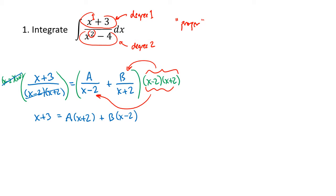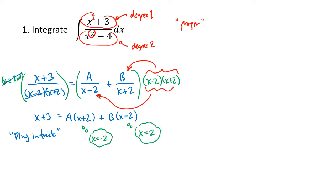With these simpler examples — no repeated factors and all linear factors — we can use what I call the plug-in trick. Because this equation needs to be true no matter what x is, we can plug in whatever value of x we like. We're going to plug in values of x that make these factors zero: x equals negative 2 makes x plus 2 equal zero (helping us find b), and x equals 2 makes x minus 2 equal zero (helping us find a).